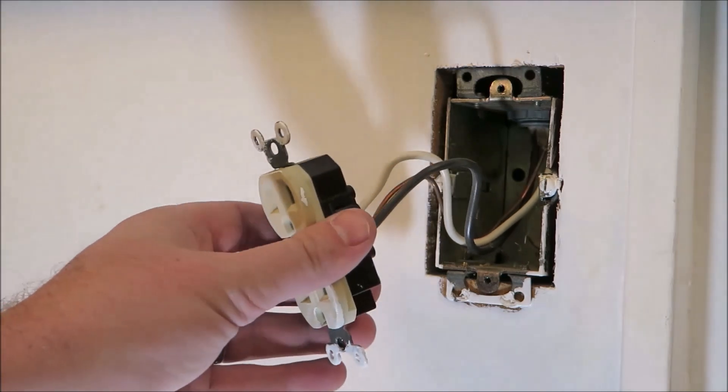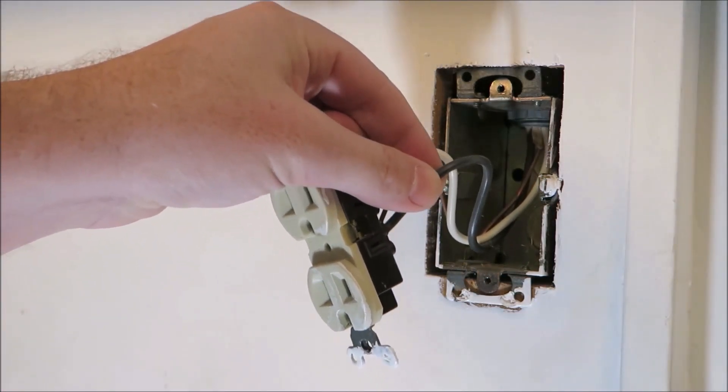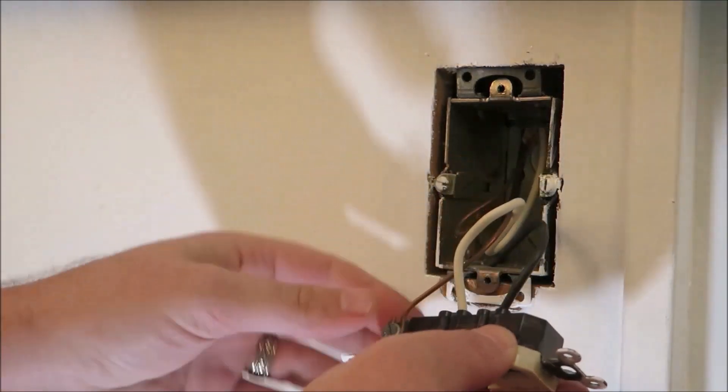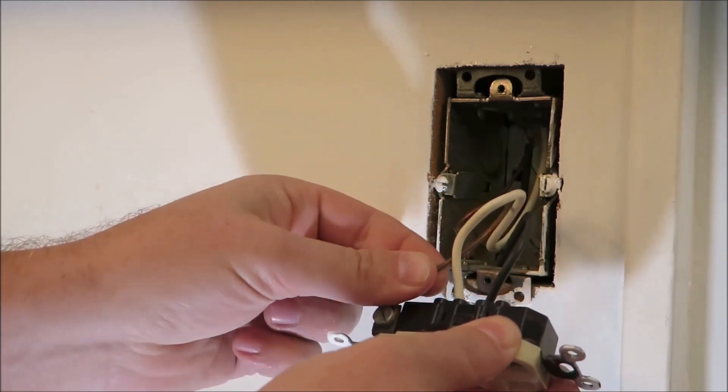So let's go ahead and start looking at the wires and explain what each one is for. The black one right here represents the hot. The white one over here is the neutral, and then the bare wire right here is your ground.